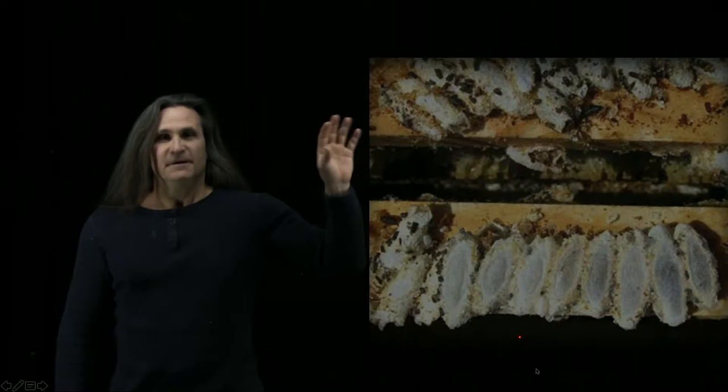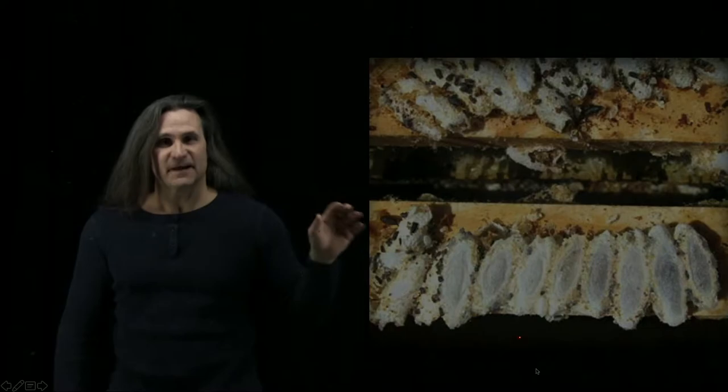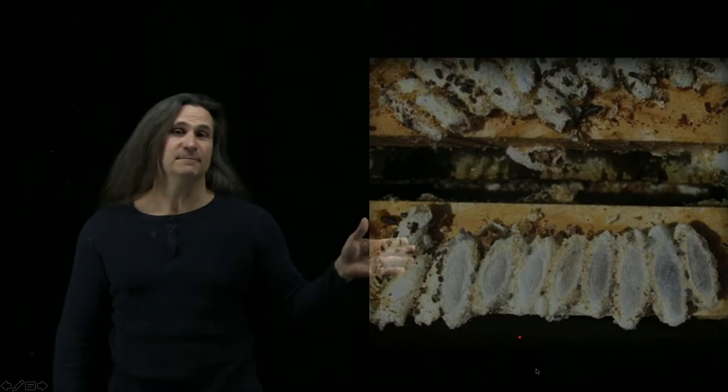So they'll move into an empty beehive, lay their eggs and pupate in the equipment. They actually burrow into the wood and lay their pupa to form these cocoons and then metamorphosis to the adult wax moth.